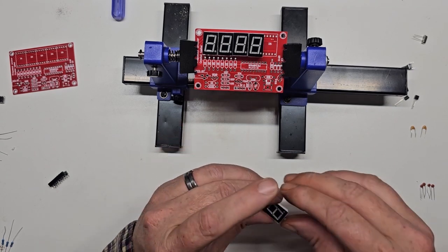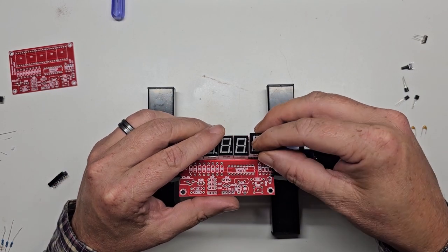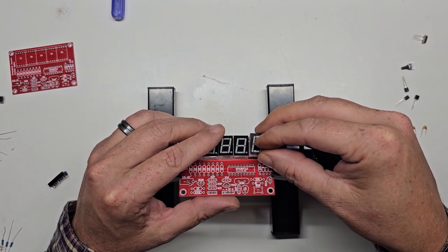Now I can mount the displays. I start by aligning the pins on one side then slowly align each pin on the other side until the display slides into place.